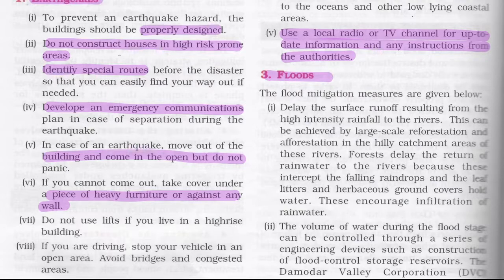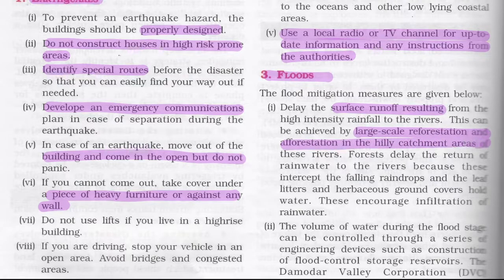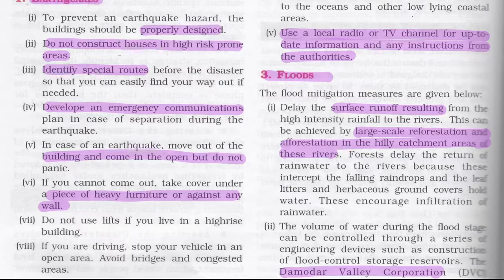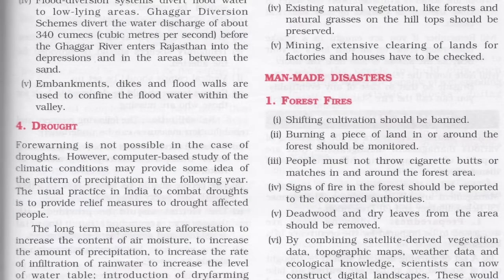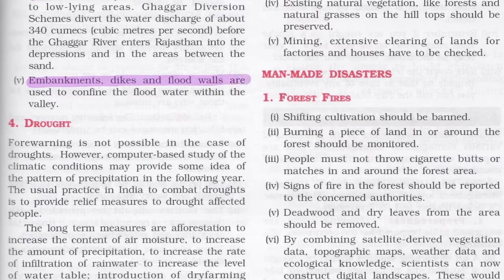Flood mitigation measures include delaying surface runoff from high-intensity rainfall through large-scale reforestation and afforestation in hilly catchment areas. The volume of water during flood stage can be controlled through engineering devices like flood control storage reservoirs. The Damodar Valley Corporation constructed four major dams and reservoirs on the Damodar River to control floods. Flood diversion systems and embankments, dikes, and flood walls are also used to confine floodwater.